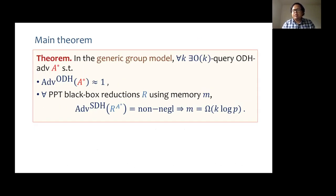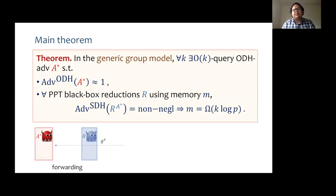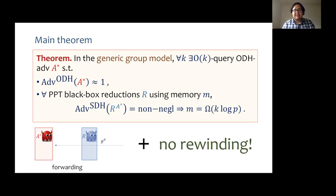This is the theorem we would like to prove, but there are some caveats. We need to restrict the reduction a little bit. The first restriction is that it forwards G^V — forwarding assumptions are commonly used by other black-box impossibility results, and more importantly, forwarding is what reductions generally do. The second restriction is that the reduction does not rewind A*. This no-rewinding assumption is required due to the limitations of our proof techniques. Proving our result for a reduction that rewinds A* is an important open question, and we have a conjecture for this which we shall come back to at the end of the talk.